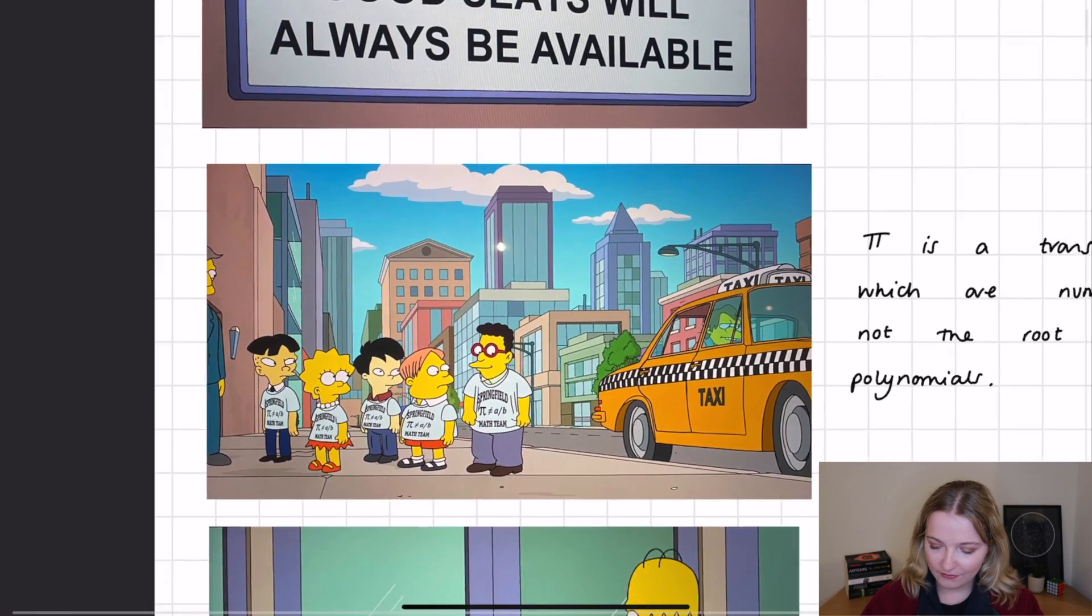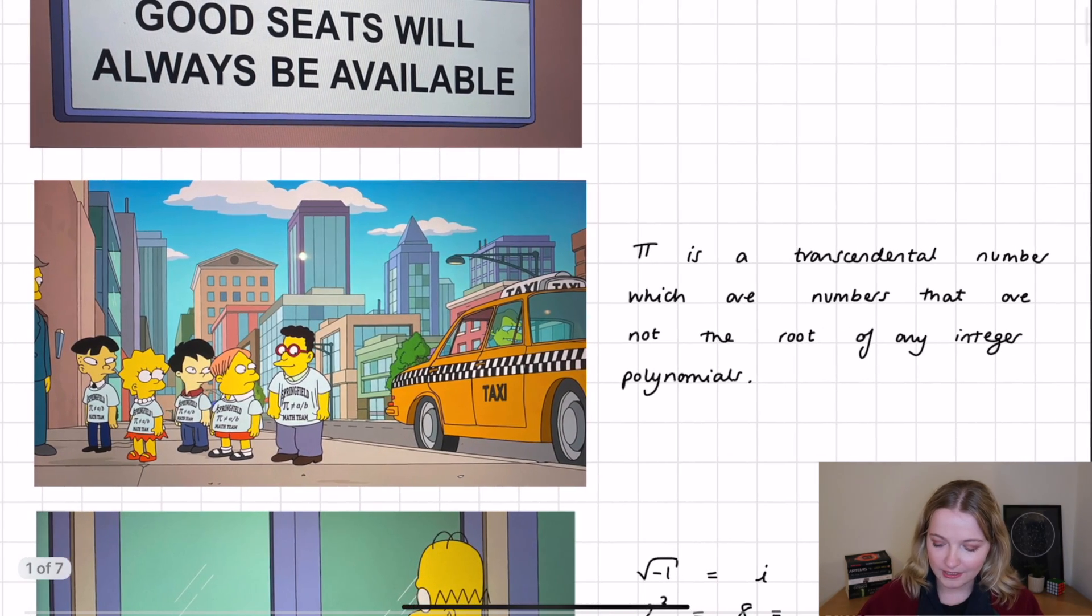Now just as a little side note, I've been writing some notes alongside each of these images. So all I said was that Pi is a transcendental number which are numbers that are not the root of any integer polynomials. So for those of you that were wondering what a transcendental number is, that's the definition right there.